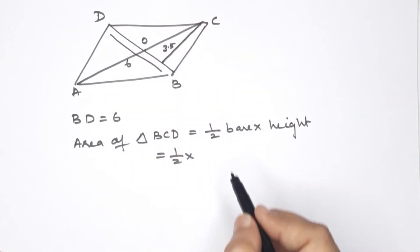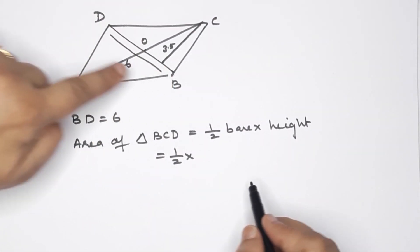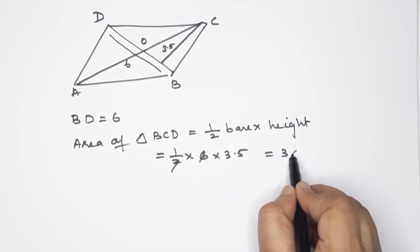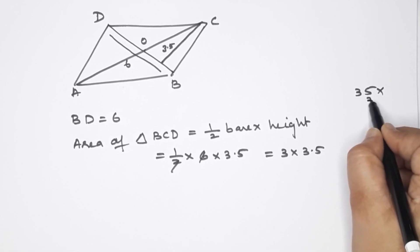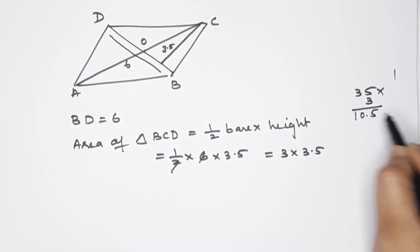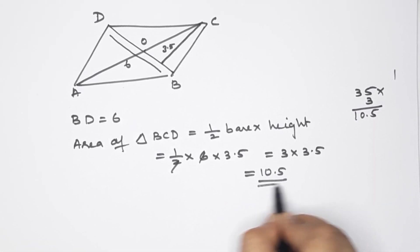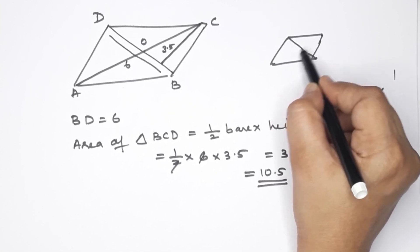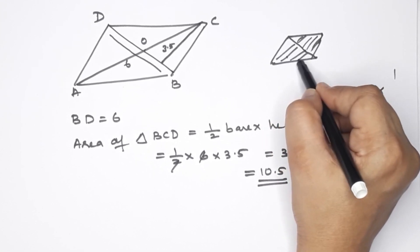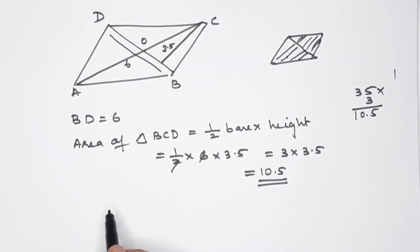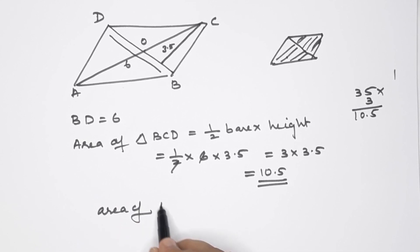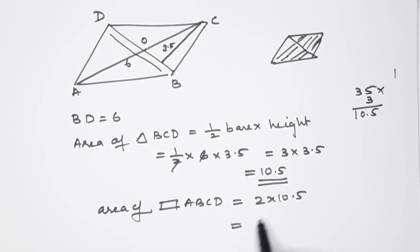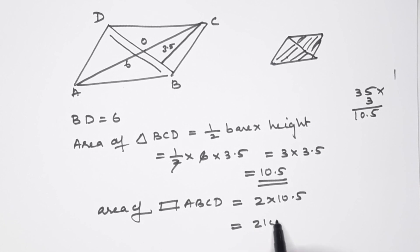This triangle has base 6 and height 3.5. Half into 6 into 3.5 equals 10.5 square centimeters. This triangle area is 10.5. There are two equal area triangles, so area of parallelogram ABCD equals 2 into 10.5, which equals 21 square centimeters. That is the parallelogram area.